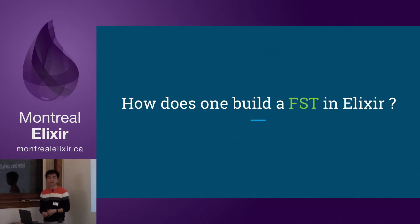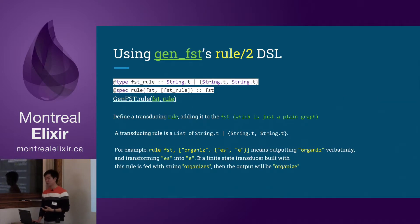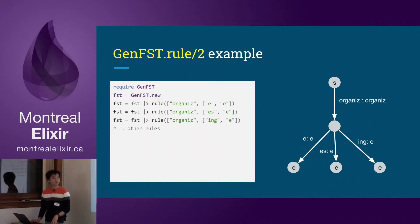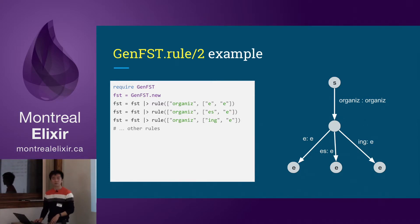So how does one build FST in Elixir? That's a difficult question, and that's why I did the hard work so you don't have to go through it. The easiest solution is to use GenFST's rule-to method — a DSL I created which helps you create FST easily. If you want to create a rule that lemmatizes 'organizes' into 'organize', you give it an array. If you put a string, it just returns the string. But if you put a tuple of two elements, it consumes the first element and returns the second. So if you put 'organizes', it returns 'organize'. To build a lemmatization tree for the word 'organize', you can just repeatedly create the rules. On the right, this is how the graph looks for the finite state transducer.